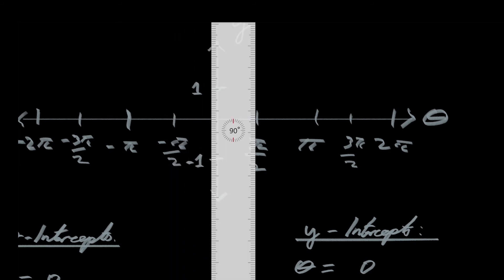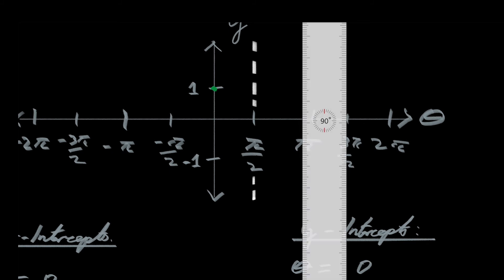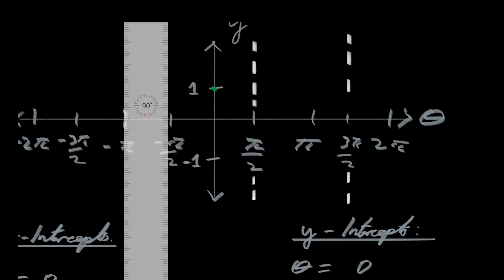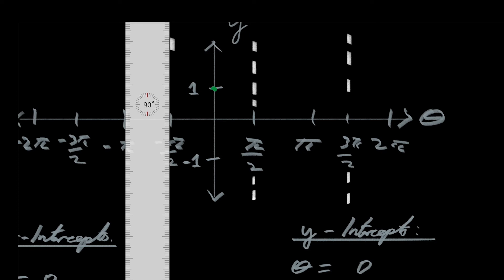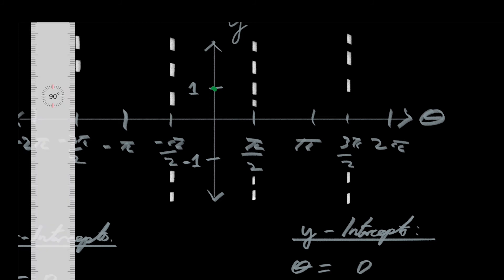Let's put the asymptotes in. I'll do them in white, sticking to the pattern of previous videos. 3 is an odd integer, so 3π/2 is an odd integer multiple of π/2, so I'll put in an asymptote there. And let's not neglect the negative angles — these are measured clockwise from the positive x-axis on a unit circle. These asymptotes are going to help us graph the function, because whenever we have asymptotes we know our function is going to display asymptotic behavior.